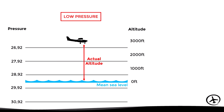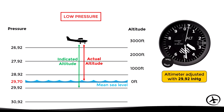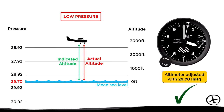In a lower than standard pressure condition, the isobars move downwards, so the 29.92 isobar no longer represents the mean sea level. In this case, the new pressure level identifying the mean sea level becomes the 29.70 isobar, meaning the QNH is now 29.70 inches of mercury. If the altimeter is adjusted to 29.92 in this situation, the indicated altitude will be higher than the actual altitude. The pilot must therefore adjust 29.70 as the new barometric reference.